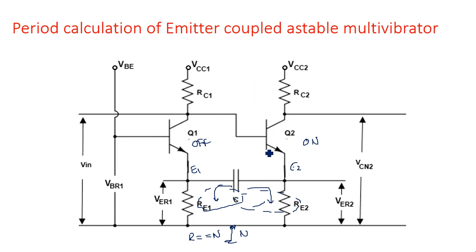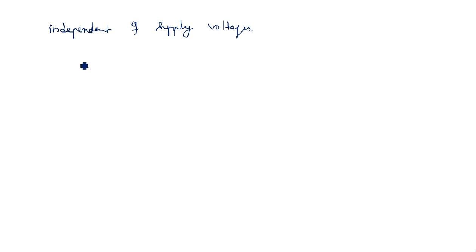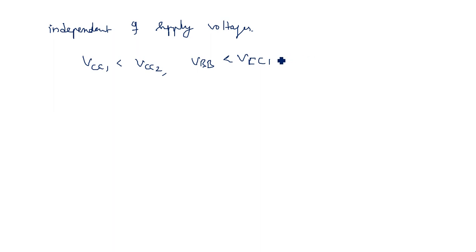The base-to-ground voltage is always less than the collector supply voltage. Since Q1 is to be driven into saturation, its base voltage must be almost as large as the collector supply voltage. We assume Vcc1 is less than Vcc2, and that the base bias supply VBB is less than Vcc1, which in turn is less than Vcc2.